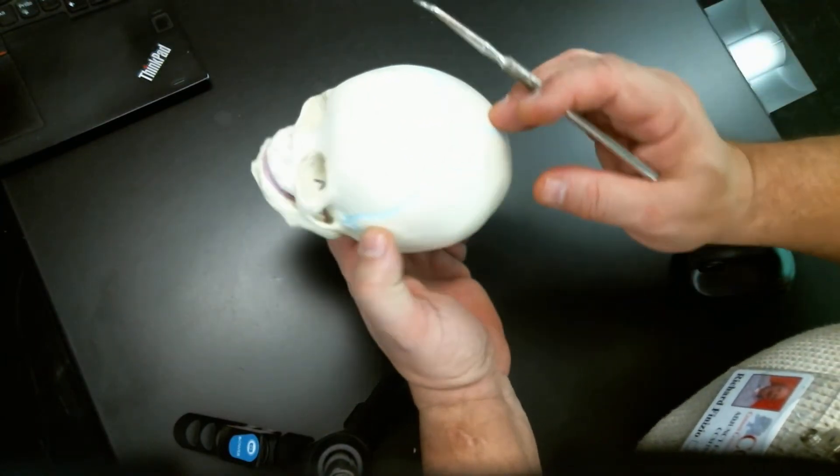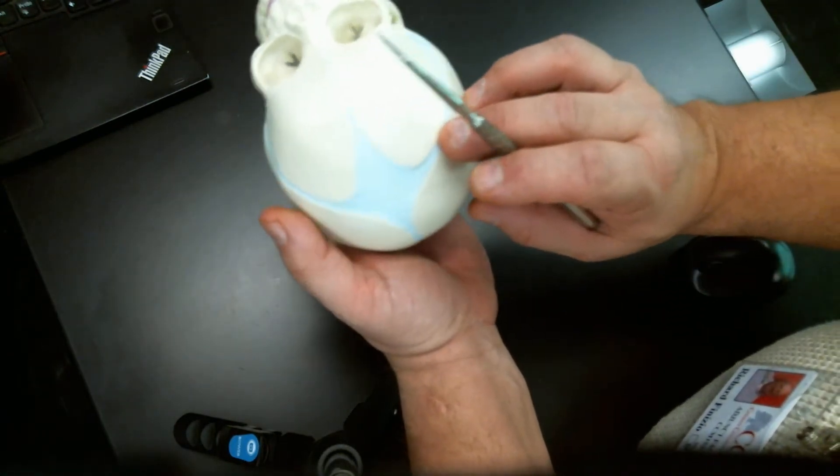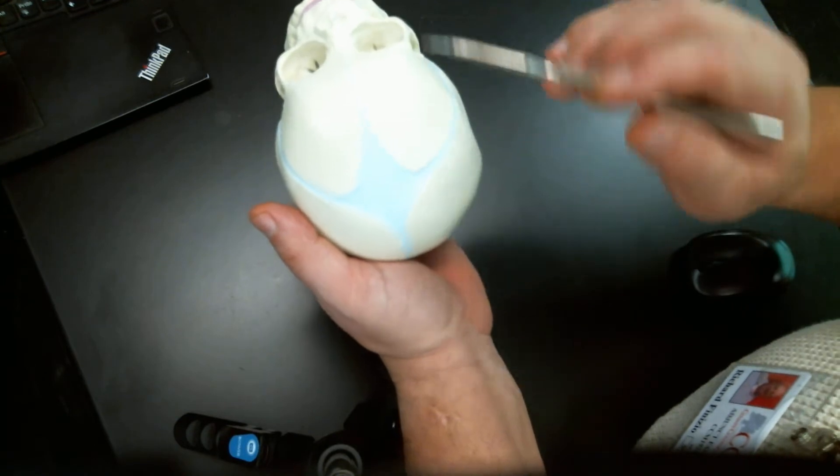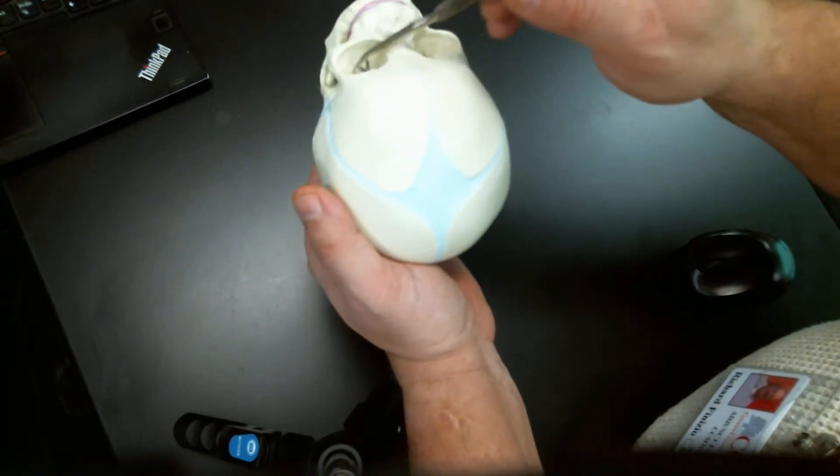But the major takeaway here is the incomplete fusion of the sutures. So this is anterior. I can see the nasal bones. I can see the orbits.